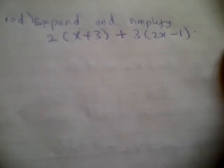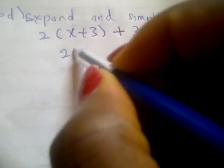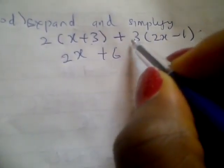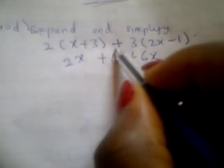Question 10D says expand and simplify 2(x + 3) + 3(2x - 1). Expanding this: 2 times x is 2x, 2 times 3 is +6, 3 times 2x is +6x, and 3 times -1 is -3.